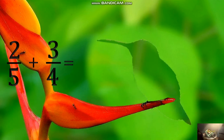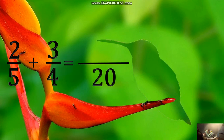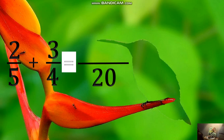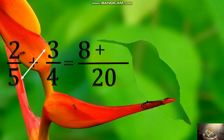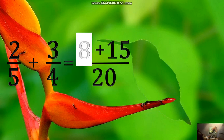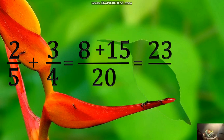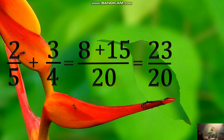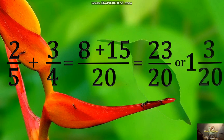Using the cross multiplication method, start with 5 times 4 equals 20. 4 times 2 equals 8. Write the plus sign, then 5 times 3 equals 15. Add the numerators: 8 plus 15 equals 23. Copy the common denominator 20. The answer is 23 twentieths or 1 and 3 twentieths.